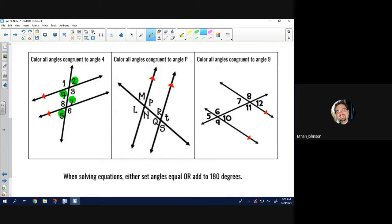Middle one. Color all angles congruent to angle P. Taking a look at it, I see angle L is directly across their vertical angles, so they have to be congruent. Angle Q has to be congruent because, once again, they're inside of the parallel lines on the opposite side of that transversal. So, we're alternate interior angles.